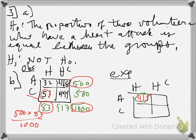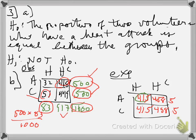The expected counts for the 'no heart attack' cells: 500 times 917 divided by 1,000 = 458.5 each. Both 'heart attack' cells had the same expected count because both row totals were equal. If the proportions are equal, we'd expect 8.3% of everyone to get a heart attack. Now I'll enter the observed values into a 2x2 matrix on the calculator: matrix A with 32, 468, 51, 449. Then run the chi-squared test (not GOF) using observed matrix A and expected matrix B.